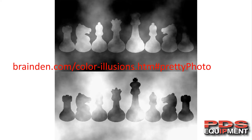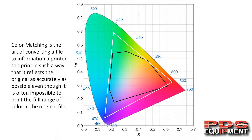I want to thank bradenden.com for all of these illustrations. If you want to go there, there are a couple more pretty cool ones you can look at. Making the point that color is about perception — it's as much art as it is science. The reason I'm making that point is because color matching is an art. It's the art of converting the file to information a printer can print in such a way that it reflects as accurately as possible the original.